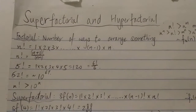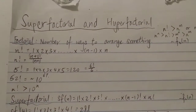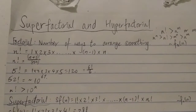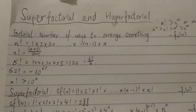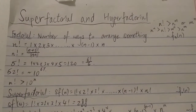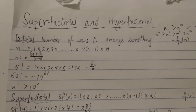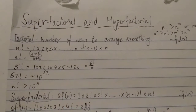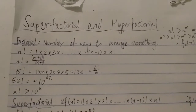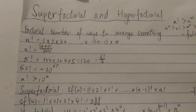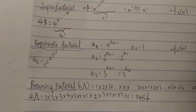Hi everyone. Today I want to talk about some variations of the factorial function. There are four of them included in this video. They are all based on the factorial function, which is by itself a pretty quick-growing function. So we have the super factorial, hyperfactorial, and the bouncing factorial.